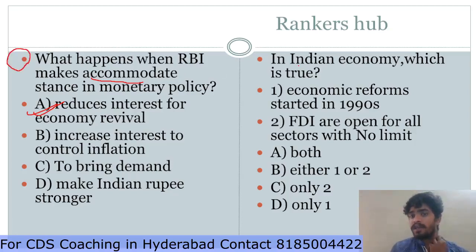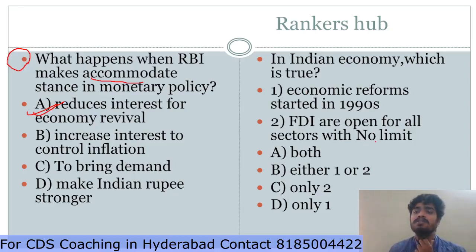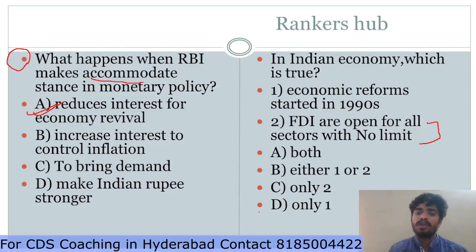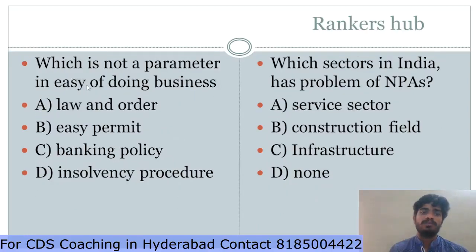Which is true regarding Indian economic reforms that started in the 1990s? The statement that FDI is open for all sectors with no limit is wrong — FDI has limits in two sectors: the nuclear field and the defense field. Apart from those two sectors, FDI is open for all. So option one only is true, and the answer is D.